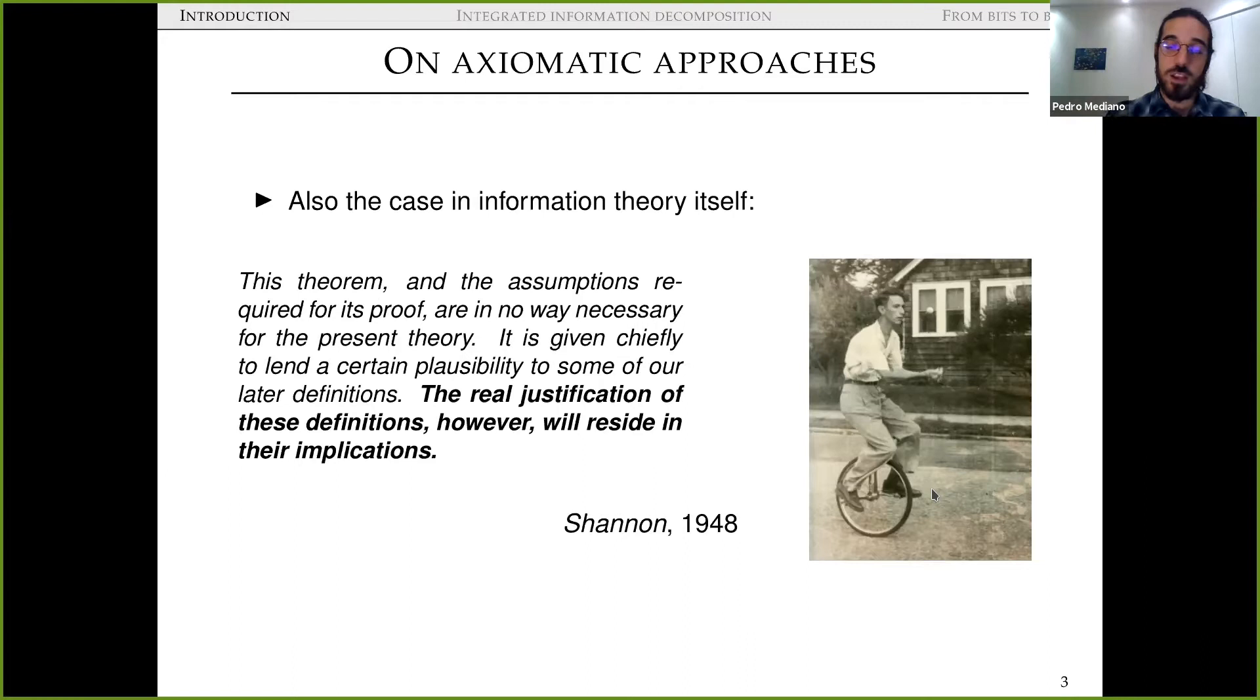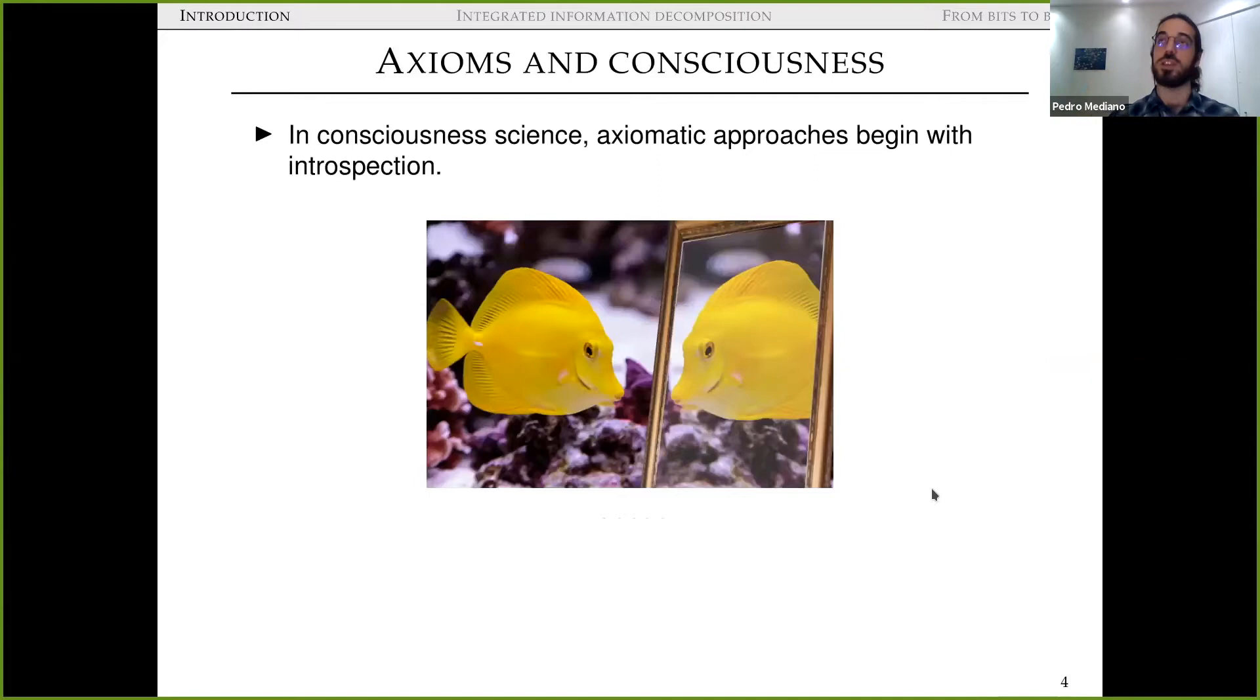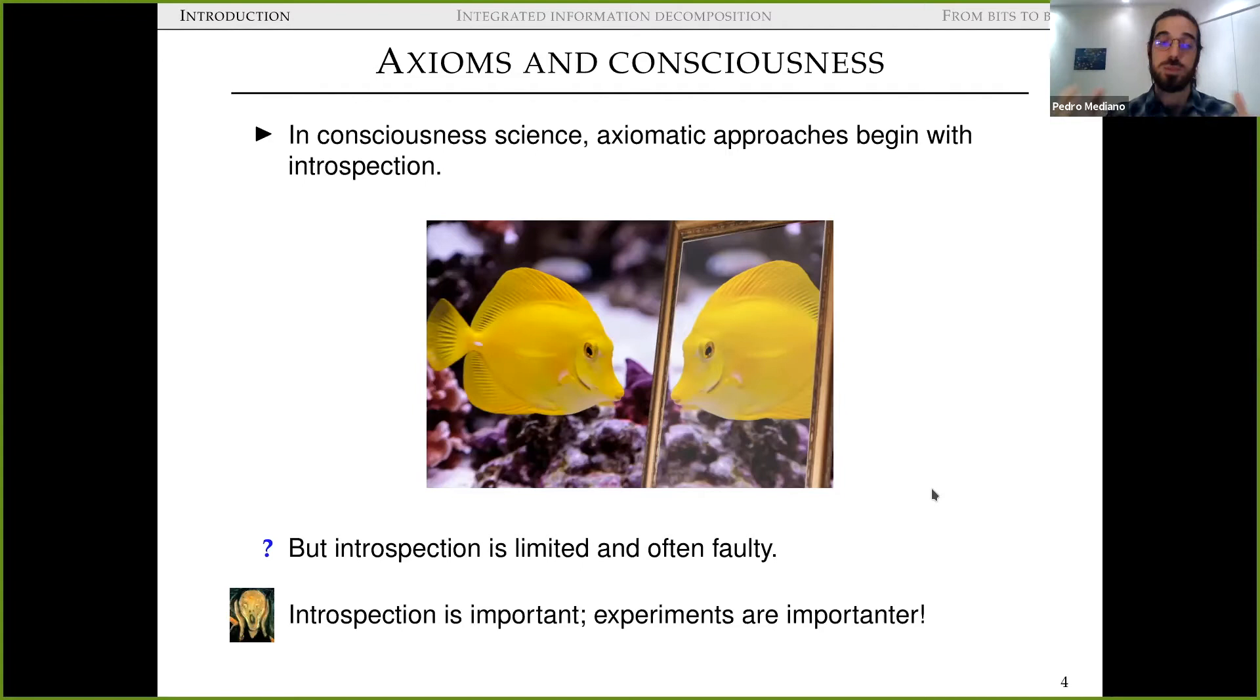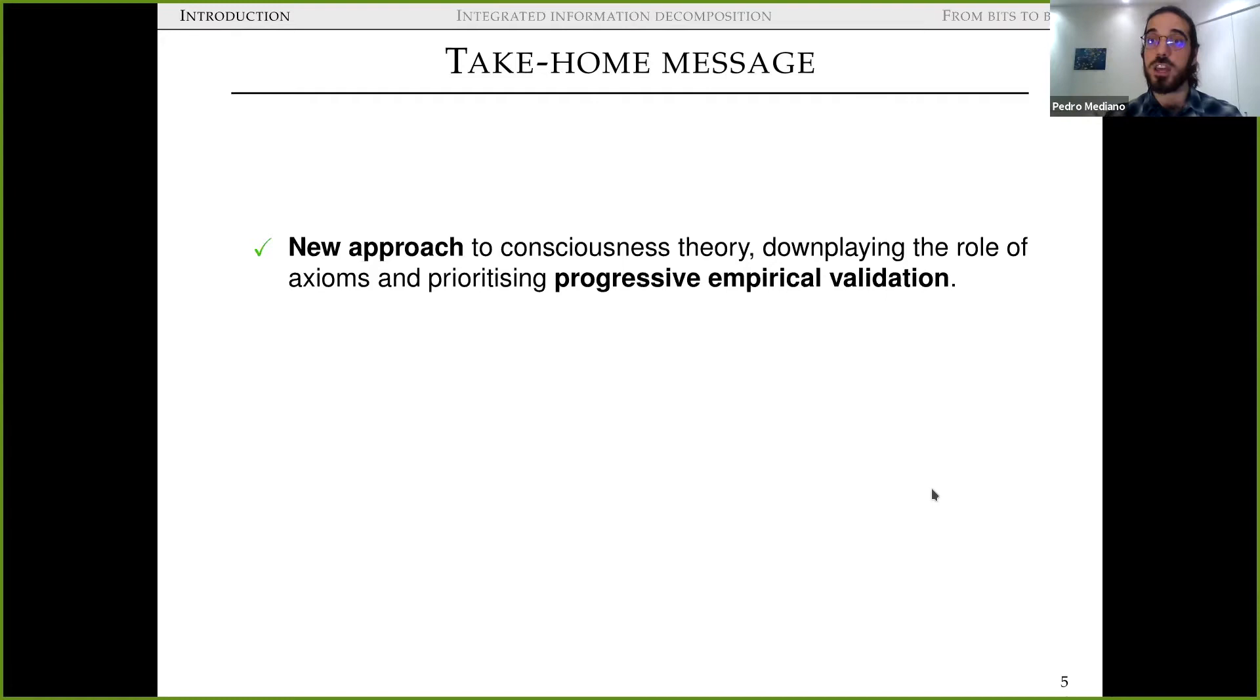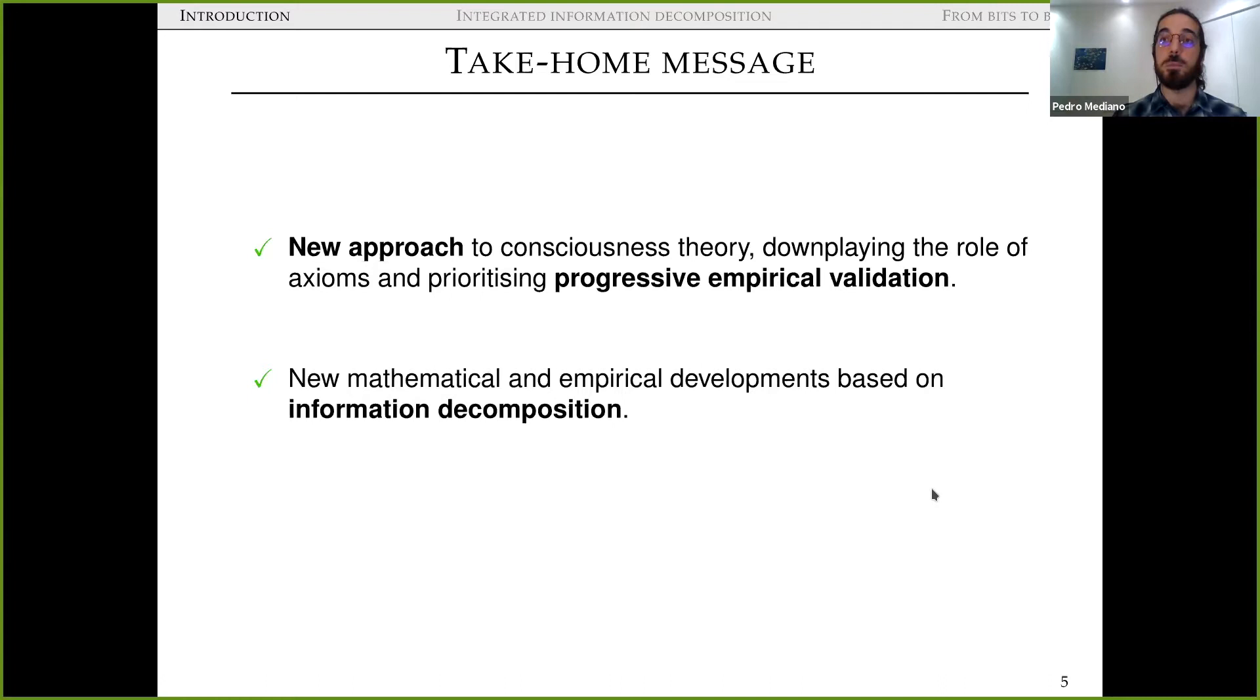So what does this mean for consciousness? In consciousness science axiomatic approaches begin with introspection. So we look inside, we sit in an armchair and we think, how is this experience? How can I axiomatize it? But these things are really limited. Introspection is limited and often faulty. And it's a bit of circular reasoning here because consciousness science itself and psychology tells us that our introspection is very limited in many ways. So it's a bit of a chicken and egg problem. So I take here my overall approach is that introspection is very important, but experiments are important in consciousness science. So my take home message and the overall approach to the problem is what I'm going to try to do in this talk is that we're developing this new approach to consciousness theory that is somehow inspired by, but different from IIT, but that crucially downplays the role of axioms and prioritizes progressive empirical validation to ground the theory into meaningful empirical developments. And all this is enabled by new mathematical and empirical developments based on the theory, on a framework of information decomposition, which I'm going to talk about briefly.